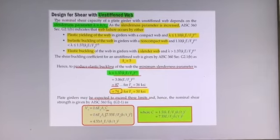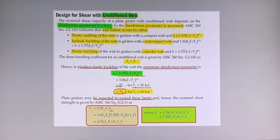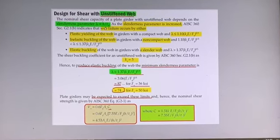We are discussing the design for shear with unstiffened web. The nominal shear capacity of a plate girder with unstiffened web depends on the slenderness parameter lambda_w.